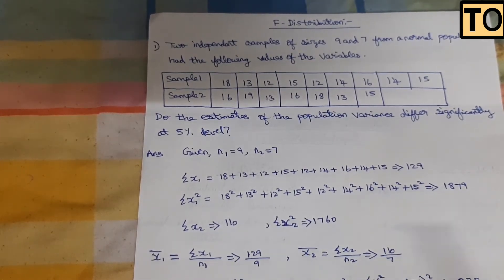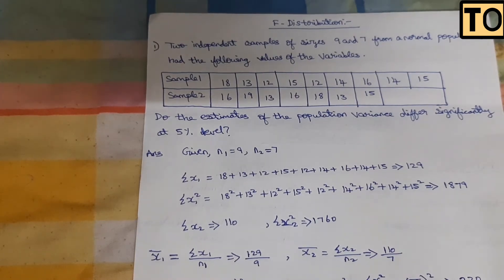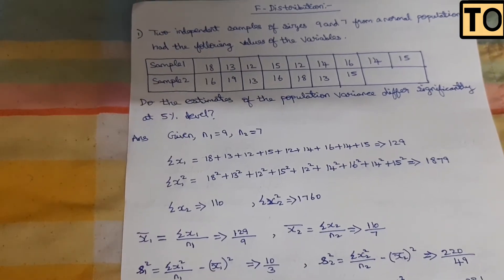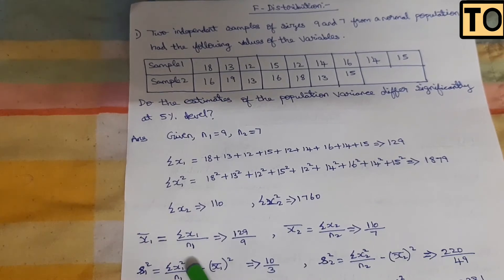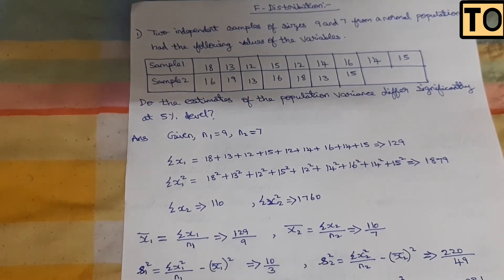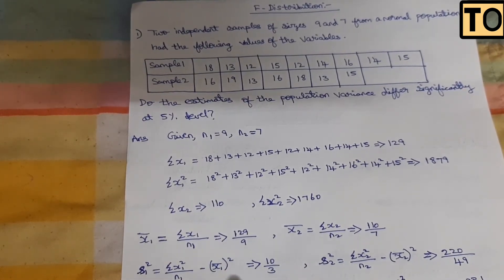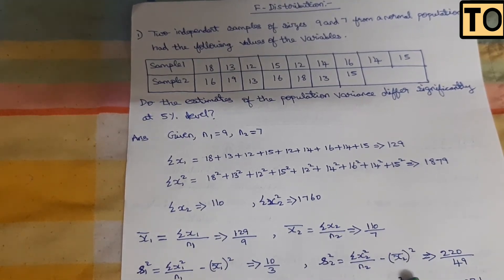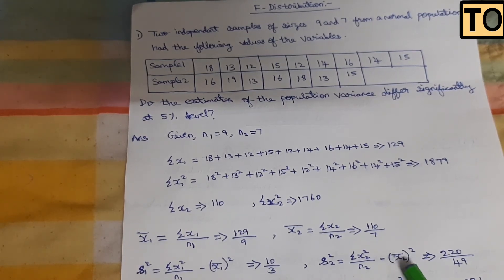Then you will find s1 squared and s2 squared. The formula for s1 squared is: sigma x1 squared divided by n1, minus sigma bar whole squared. Similarly, s2 squared is: sigma x2 squared divided by n2, minus sigma bar whole squared.